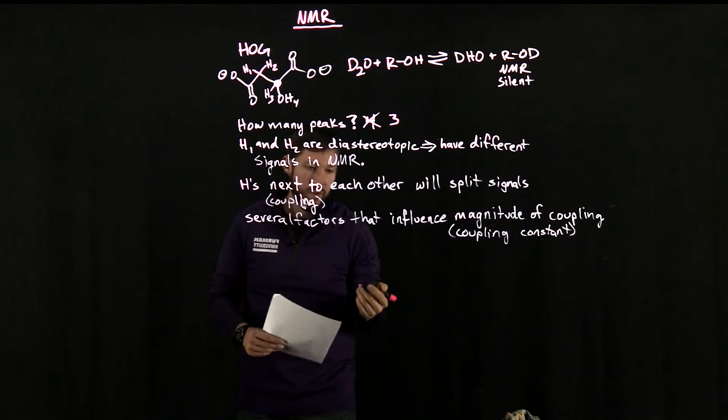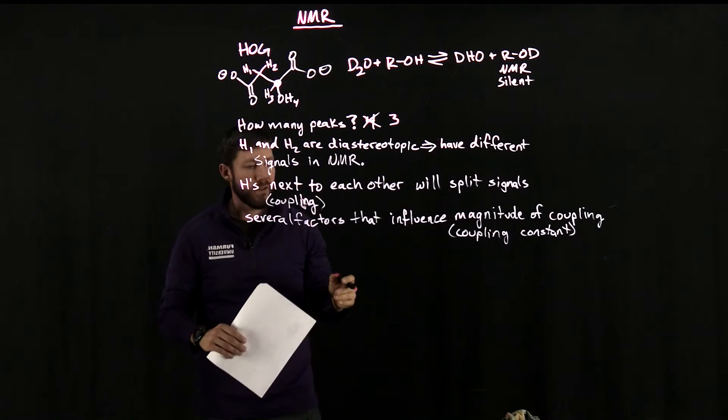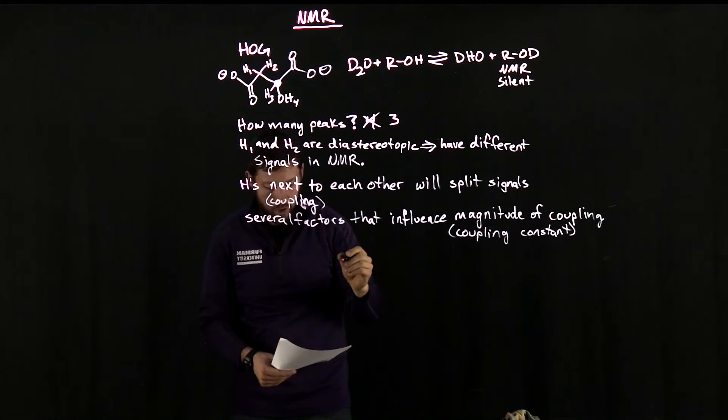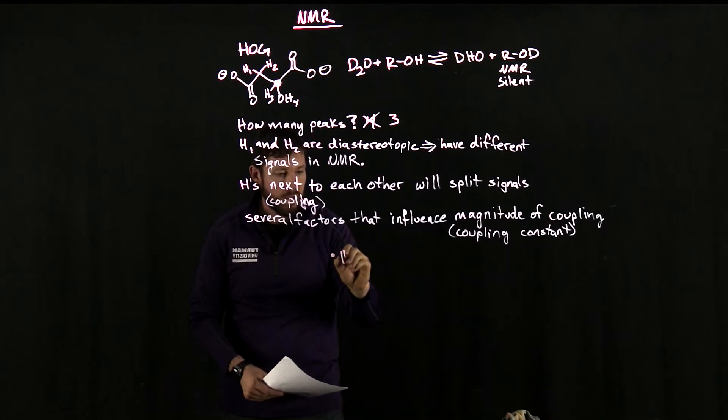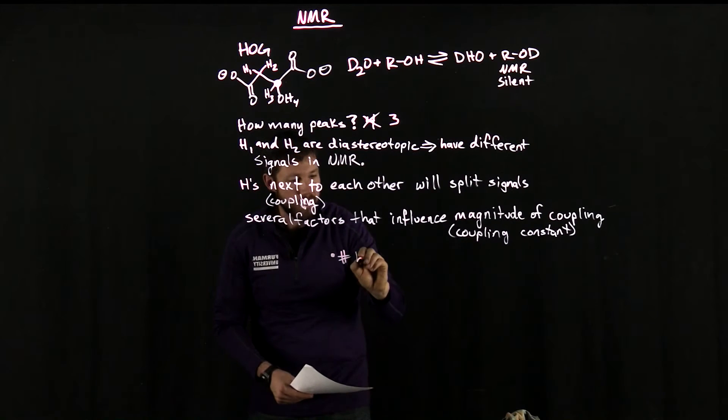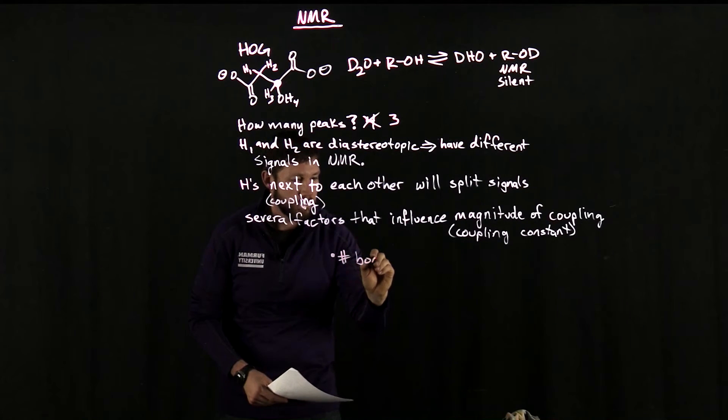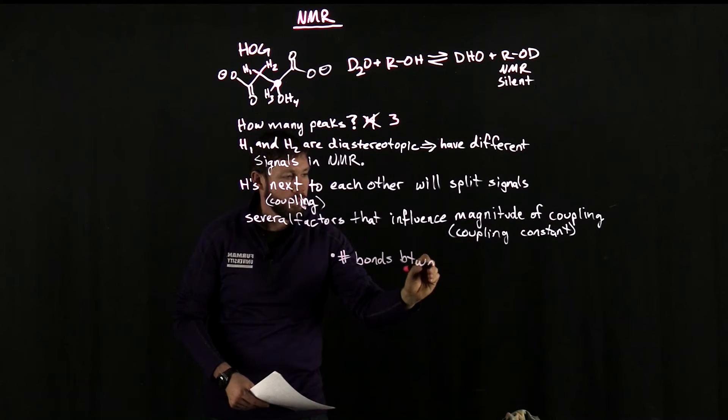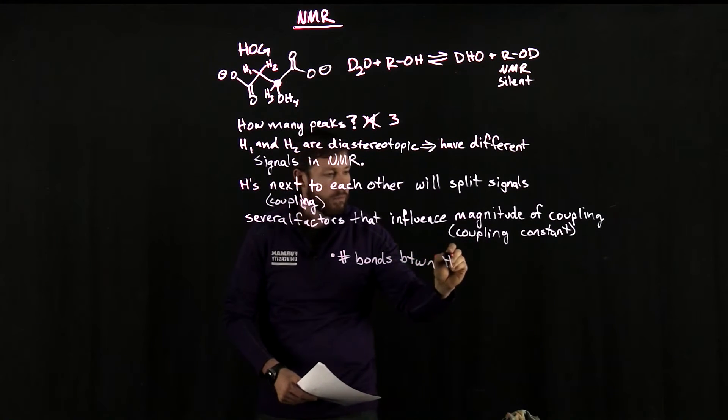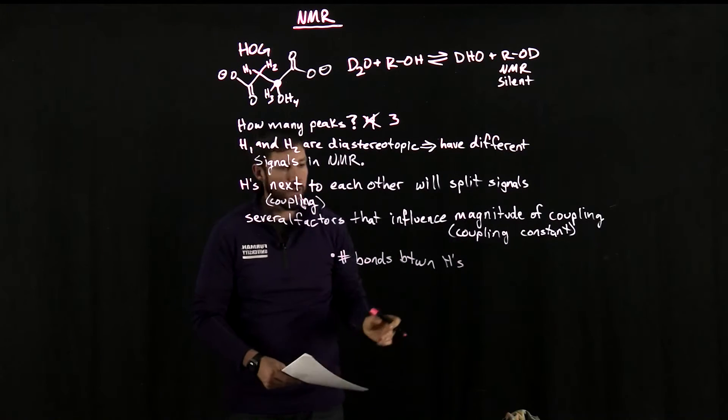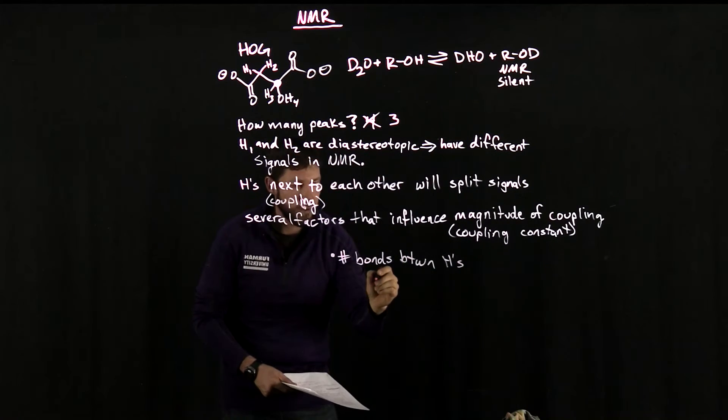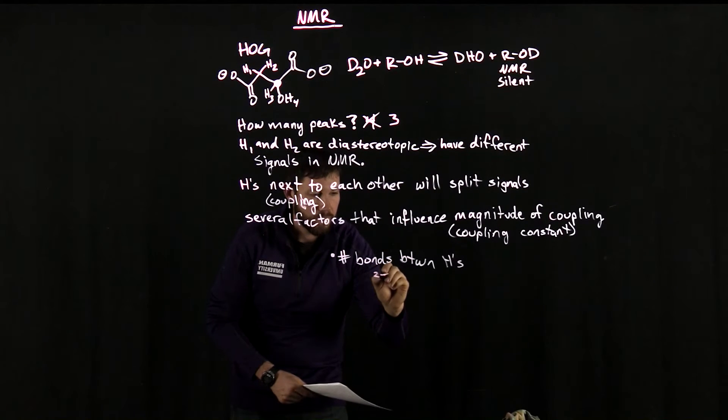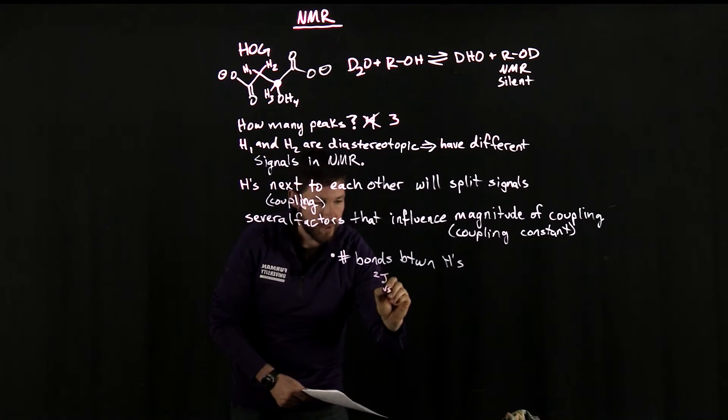And this magnitude of coupling is referred to as the coupling constant. So of the things that can influence this coupling constant, or how far spaced the splitting is in the peaks in the NMR spectrum, one is the number of bonds between the hydrogen. And in organic molecules, this generally is J2 coupling versus J3 coupling.